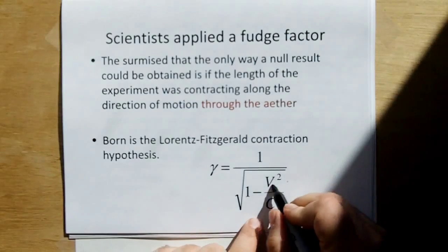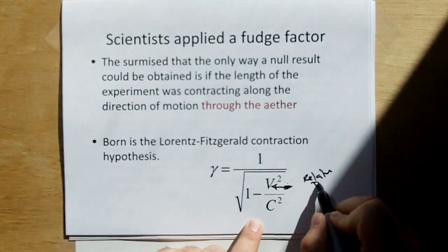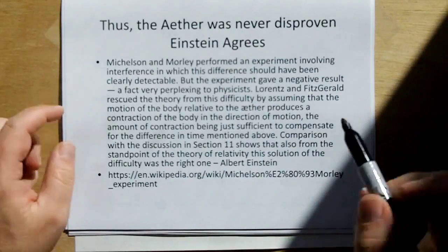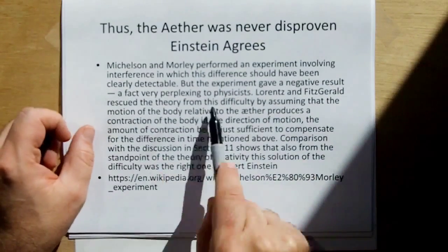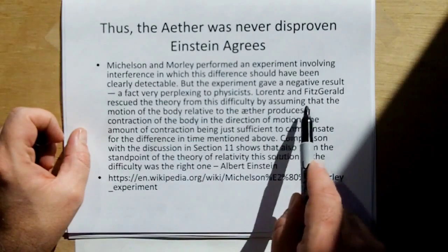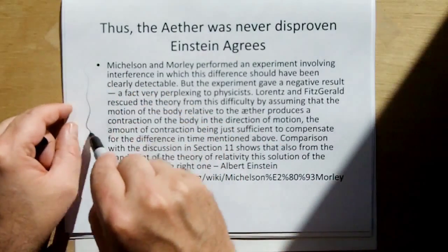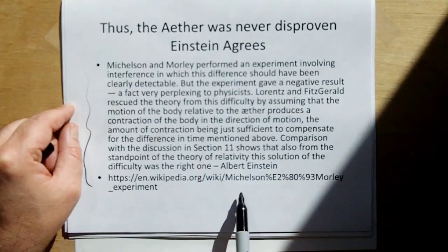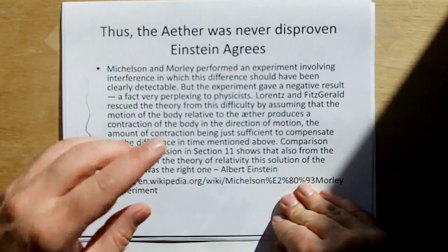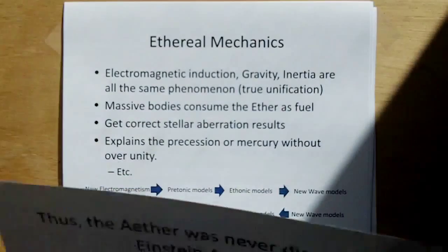And born is the Lorentz-Fitzgerald contraction hypothesis. Where this, my friends, is not the velocity of the experiment. This is the velocity of the experiment relative to aether. Yes. You think I'm lying? Well, Einstein agrees. Lorentz and Fitzgerald rescued the theory, the aether theory, from this difficulty by assuming that the motion of the body relative to the aether produces a contraction of the body in the direction of motion. You can read the rest of this on your own. This is in Wikipedia, Michelson-Morley experiment. So Einstein agrees that Lorentz and Fitzgerald rescued the aether model.